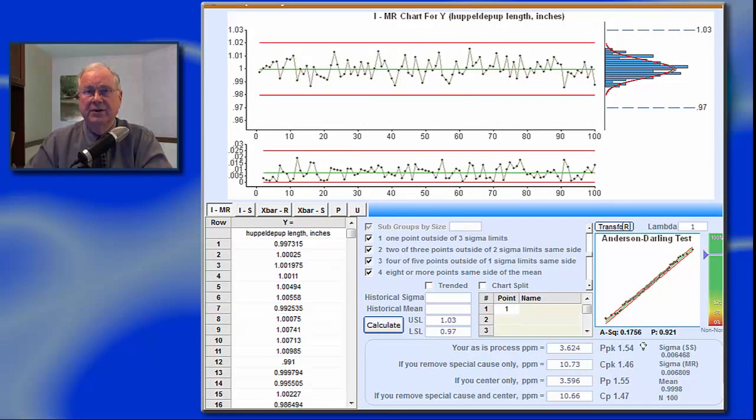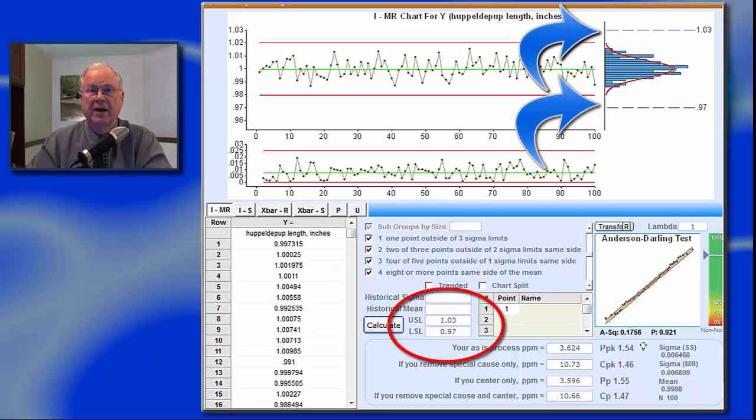To evaluate satisfactoriness, we need to add another tool, the capability study. It uses the same data, but instead of comparing the data to the red lines generated from the data, it compares the data with one or two specification limits, which are the voice of the customer. A capability study compares the voice of the process with the voice of the customer.